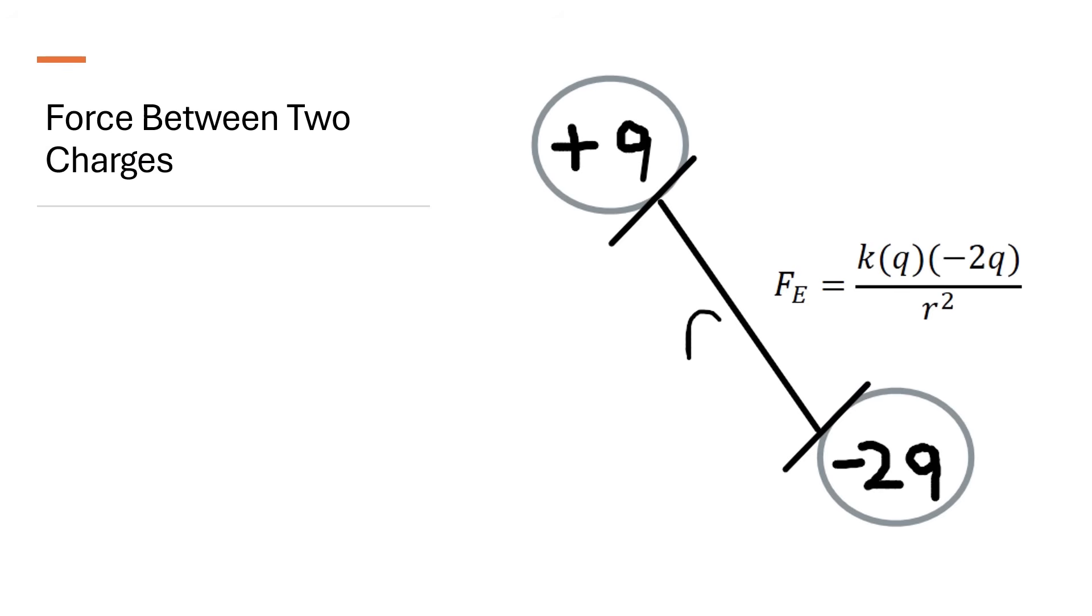Charged particles exert electric force on each other like how objects with mass exert gravitational force on each other. This force can be found using Coulomb's law, which says force is proportional to the product of the charges over the distance squared. The proportionality constant is 1 over 4 pi epsilon-naught.